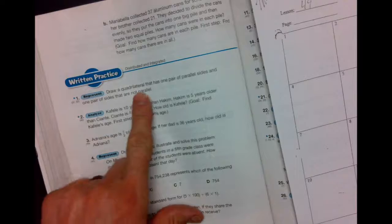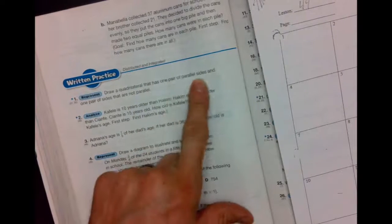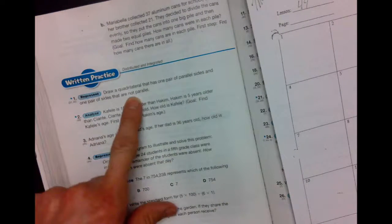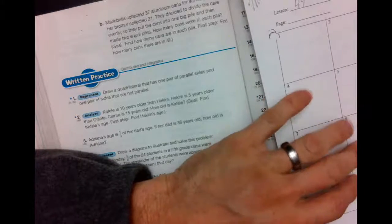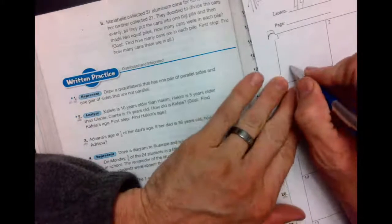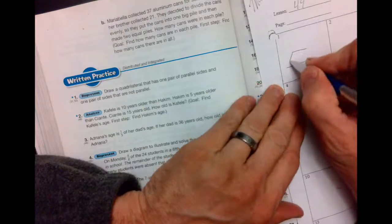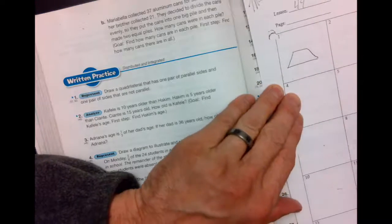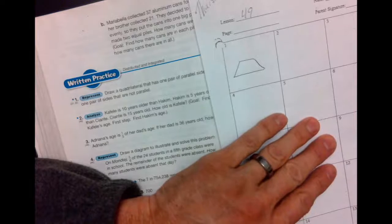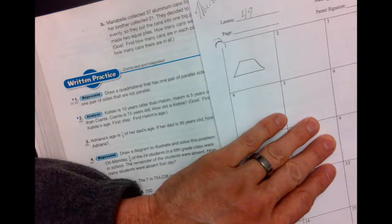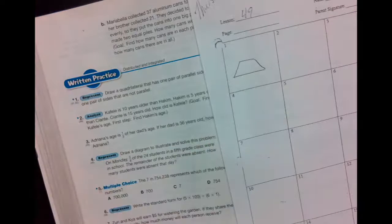It says draw a quadrilateral that has one pair of parallel sides and one pair of sides that are not parallel. Now the easiest way to do ones that are not parallel is to make the bottom and the top parallel and make one longer and one shorter. Those are parallel and now these are oblique. One pair of parallel sides is actually called a trapezoid. So we just created a trapezoid. It's a quadrilateral with one pair of parallel sides.